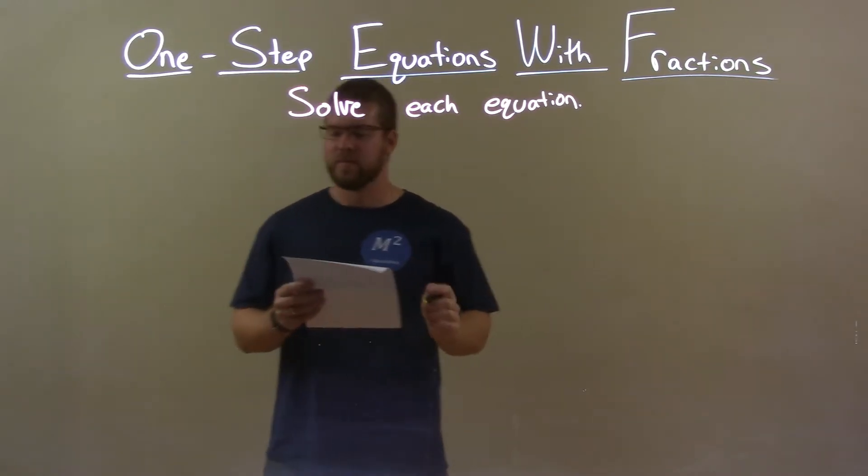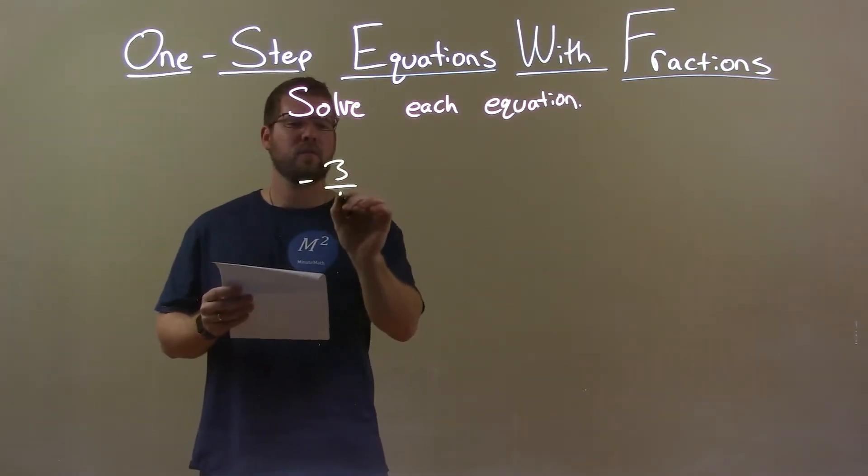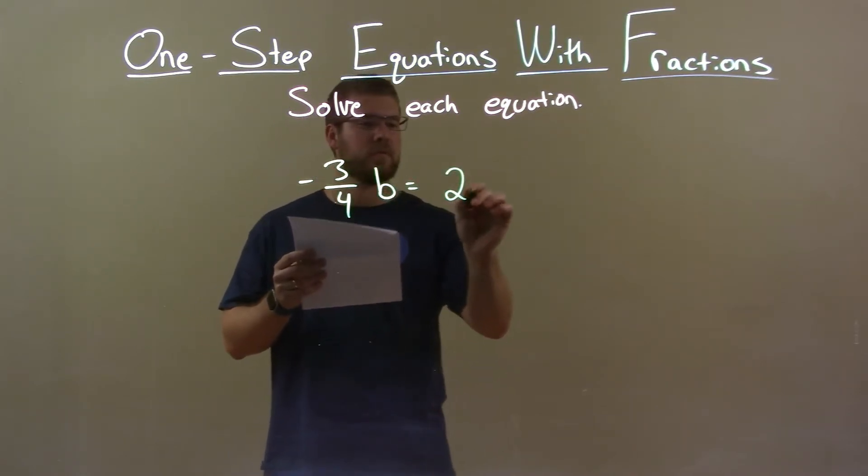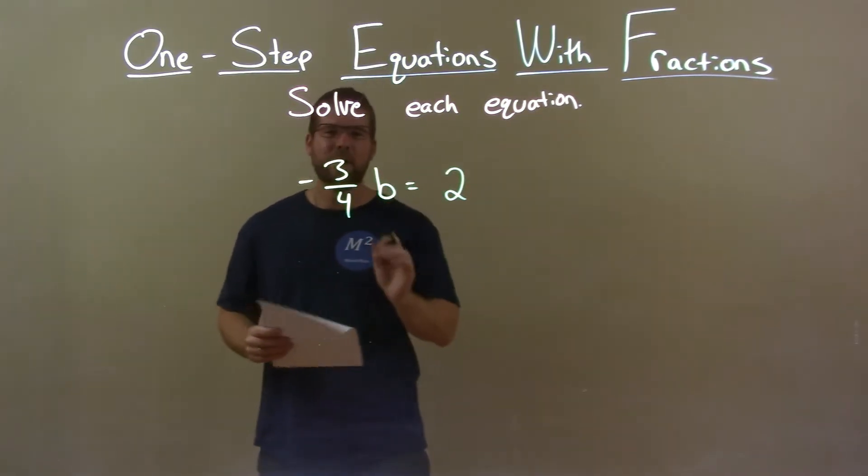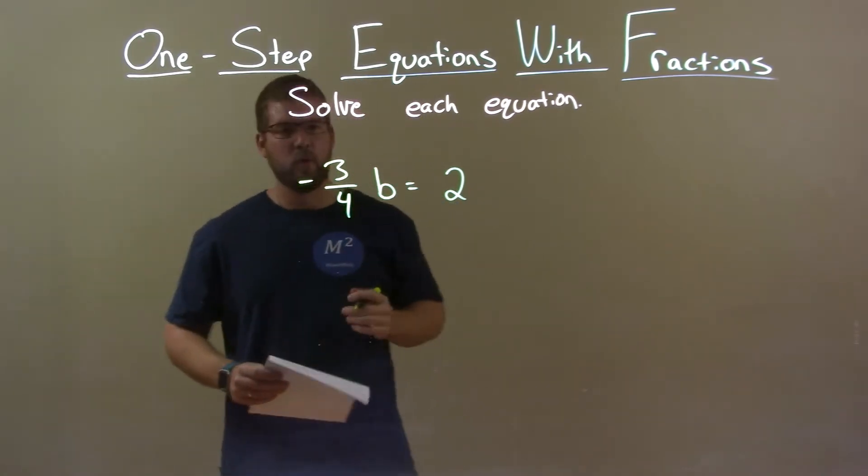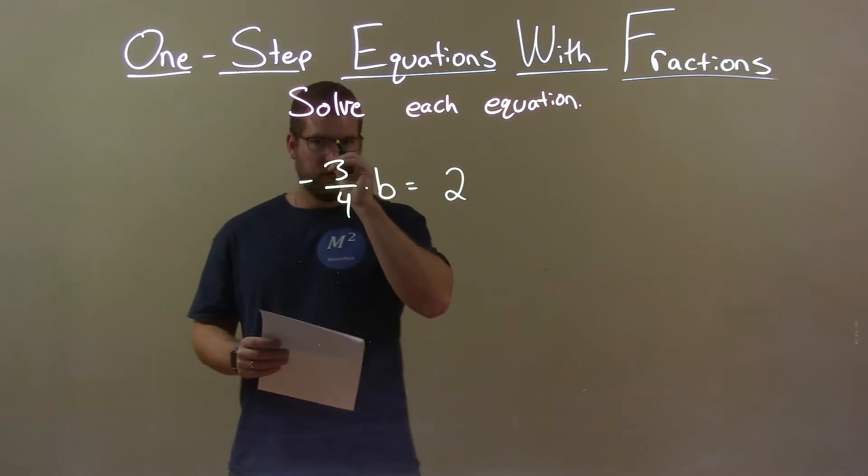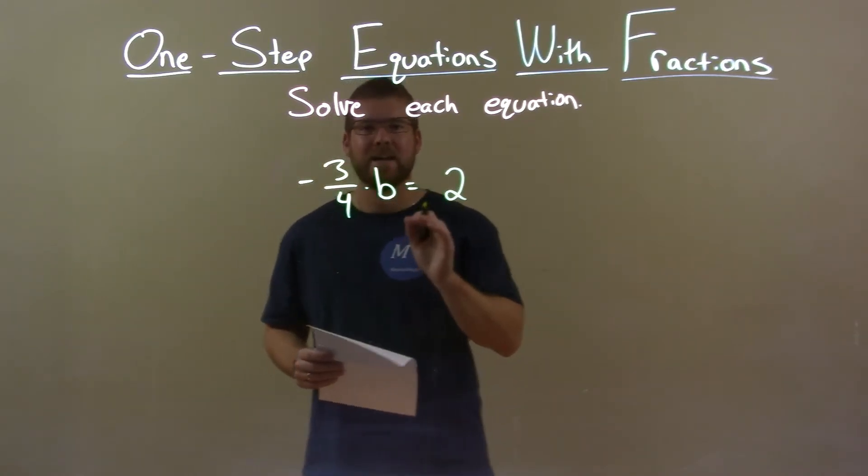If I was given this equation, negative 3 fourths times B equals 2. Well, I want to get B by itself. Negative 3 fourths is B multiplied right out front. To eliminate that negative 3 fourths, I want to multiply that by the reciprocal,